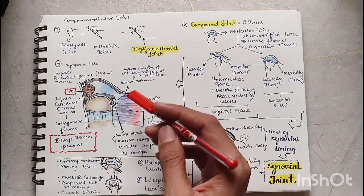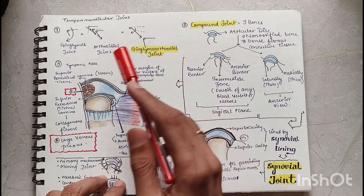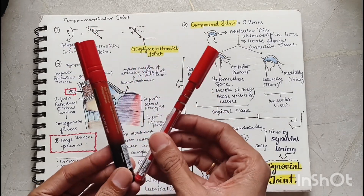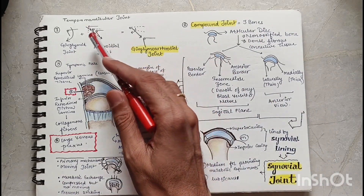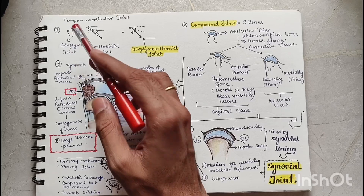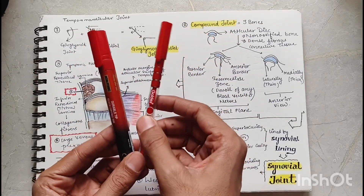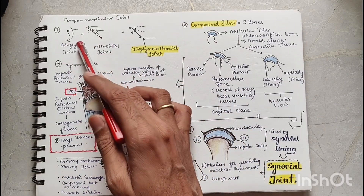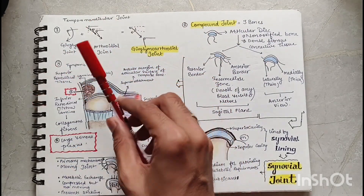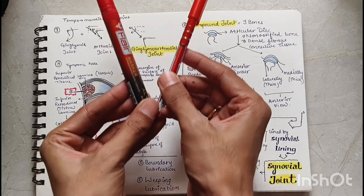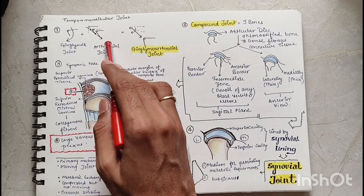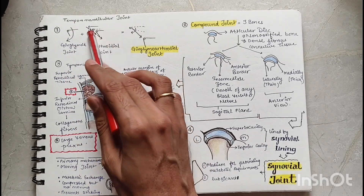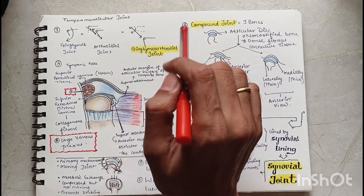The temporomandibular joint is a ginglimoarthroidal joint. Ginglimoid means a joint which has opening and closing type of movement — a hinge joint. Our TMJ has hinge movement, that is opening and closing, but it also has translatory movement, meaning it moves in a straight line. That is why it is called a ginglimoarthroidal joint — arthroidal means moving in a straight line.